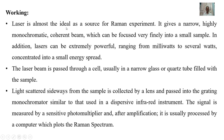The laser is almost the ideal source for a Raman experiment. It gives a narrow, highly monochromatic, coherent beam which can be focused very finely into a small sample. Lasers can be extremely powerful, ranging from milliwatts to several watts concentrated into a small energy spread. The laser beam is passed through a cell — usually a narrow glass or quartz tube filled with the sample. Light scattered sideways is collected by a lens and passed into the grating monochromator. The signal is measured by a sensitive photomultiplier, and after amplification it is processed by a computer which plots the Raman spectrum.